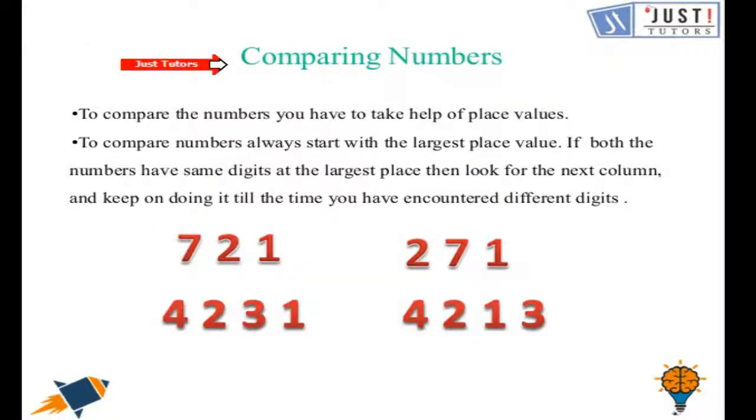Now comparing numbers. To compare these two numbers you need to start with the largest place values. You have to take the help of place values when you compare the numbers. To compare numbers always start with the largest place value. If both the numbers have same digits at the largest place value then look for the next column, and keep on doing it till the time you have encountered different digits.